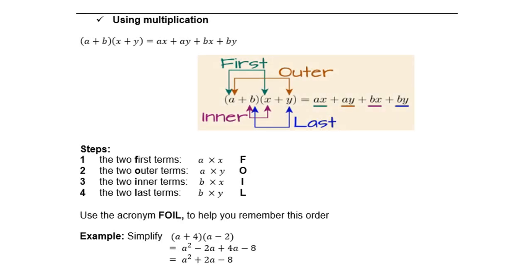Or you use what we call the method FOIL. So the first term, the two outer terms, the inner terms, and then the last two terms. So a times x is ax, a times y is ay, b times x is bx, b times y is by. You can follow that method. Instead of using the previous method with a table or drawings, this is maybe much easier. Then you can just collect your like terms. Negative 2a plus 4a gives you 2a. Therefore, the answer is a² + 2a - 8.